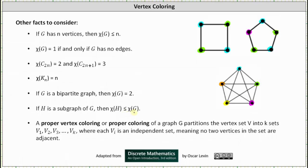Finally, a proper vertex coloring of a graph G partitions the vertex set V into K sets, V sub one through V sub K, where each V sub i is an independent set, meaning no two vertices in the set are adjacent.